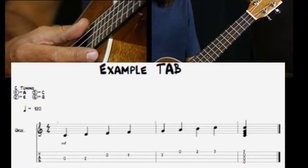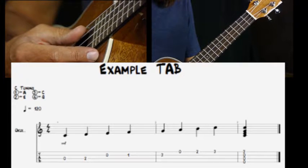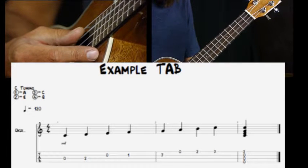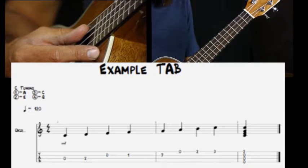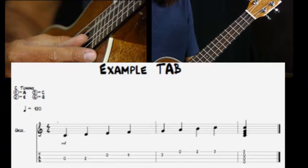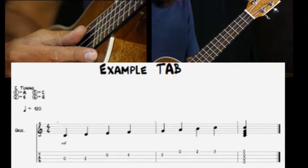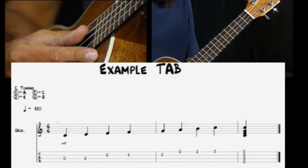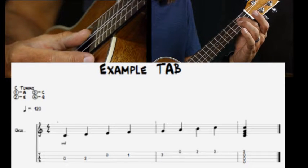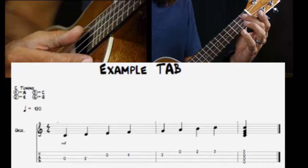Okay, now you see the numbers. We start with a zero on the C string. The zero means you play an open string, no fretting required. So it would be just like that. Then you see a two. That means you play the second fret on that string, which is the C string. We play that here. So zero, two.